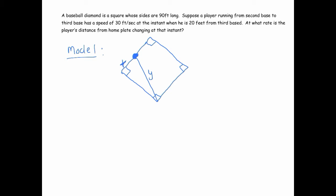And so, oh, and this side is 90, right? Because that's just this side of the diamond. So that's a constant. So now what do we know? We know that, let's see, his speed, he's running at a speed of 30 feet per second.